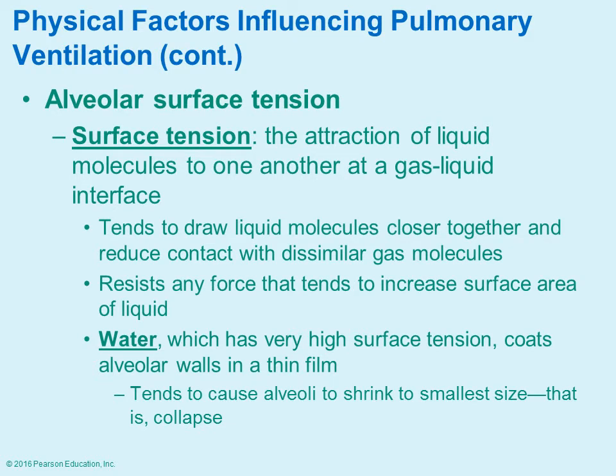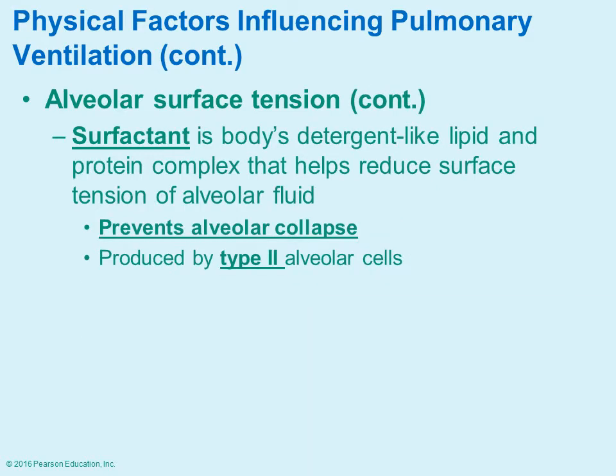In terms of surface tension at the alveoli, surface tension is the attraction of one liquid molecule to another right at the gas-liquid surface. Water tends to have very high surface tension, and if it were just water by itself in the alveoli, it would cause the alveoli to shrink and basically collapse. To counteract this, the body makes a surfactant — a lipid-waxy protein complex — that helps reduce the surface tension and prevents the alveoli from collapsing.